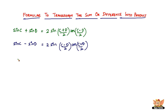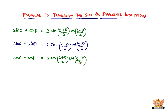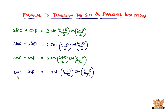The next formula is cosine C plus cosine D, which equals 2 cosine of (C plus D) by 2, times cosine of (C minus D) by 2. And the final formula is cosine C minus cosine D, which equals minus 2 sine of (C plus D) by 2, times sine of (C minus D) by 2.